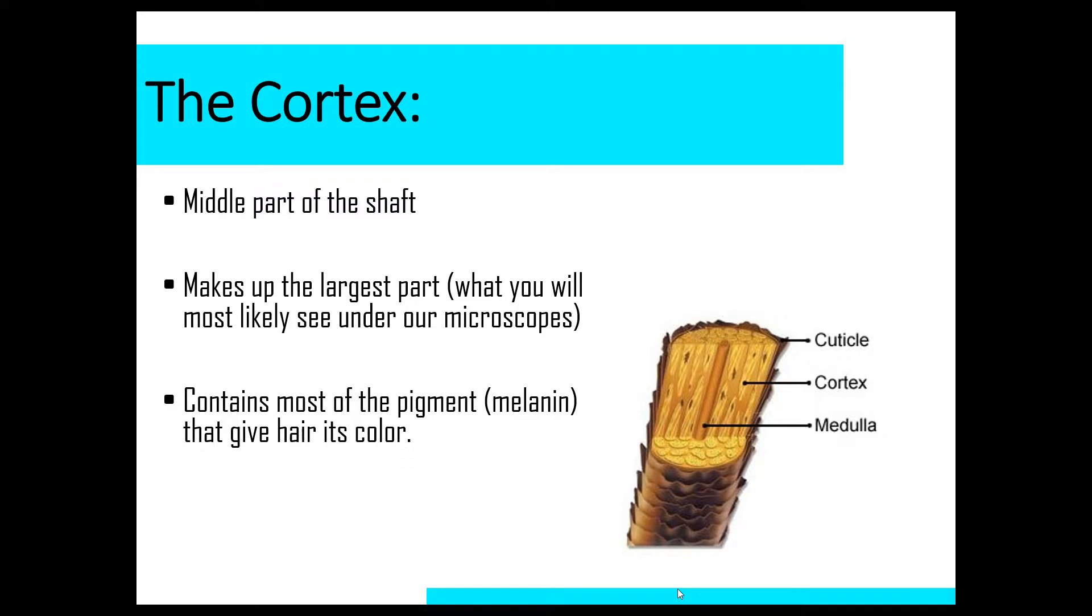The inside part of the hair, inside of the cuticle, is known as the cortex, and it makes up the largest part of the hair shaft. When you look under a microscope, this is the part that you will most likely see. The cortex contains the pigment or the melanin, which gives the hair its color.